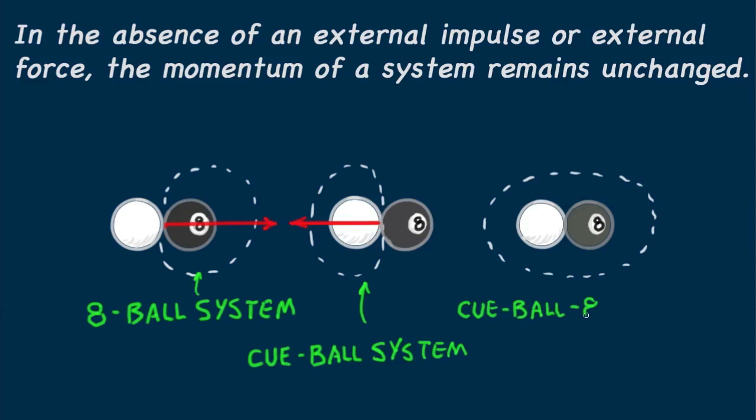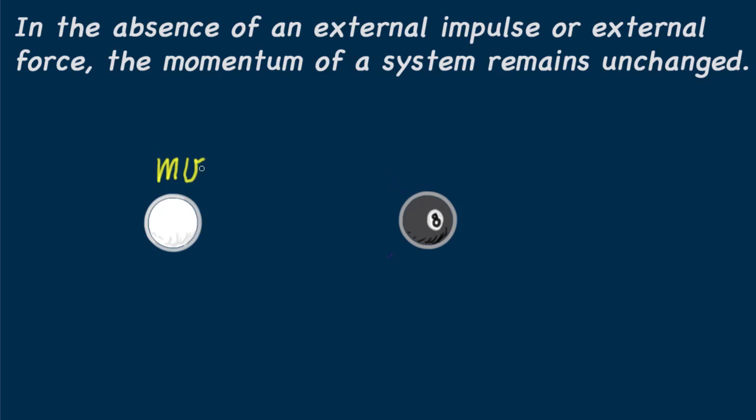Now let's look at this from the point of view of the combined eight ball, cue ball system. In this larger system, the forces we've considered are internal forces. No external force acts on the system. So there is no net change in the system's momentum. The momentum before the collision was MV, and the momentum after the collision is still MV. Momentum has simply transferred from the cue ball to the eight ball.